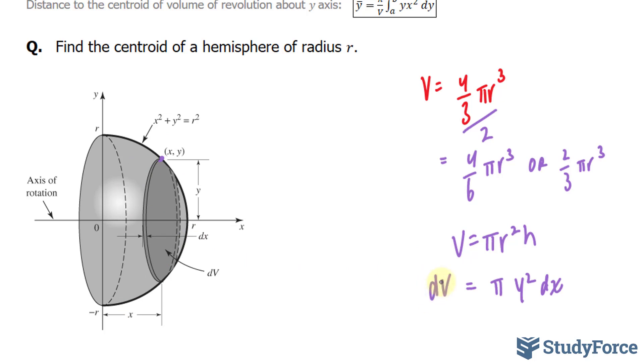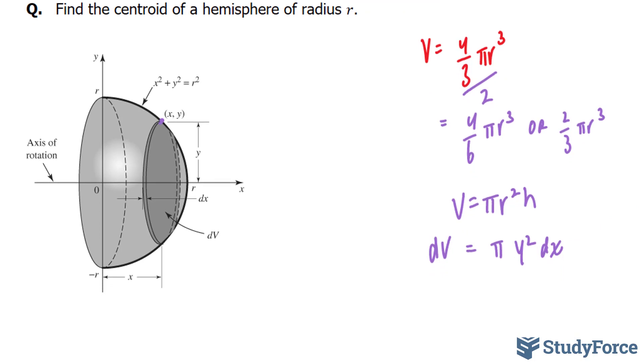So the first thing that I'll do is replace this y with what it's equal to. Y is equal to, and if I rearrange this, I end up with r squared minus x squared. So I'm going to replace this y with r squared minus x squared, and don't forget the dx.